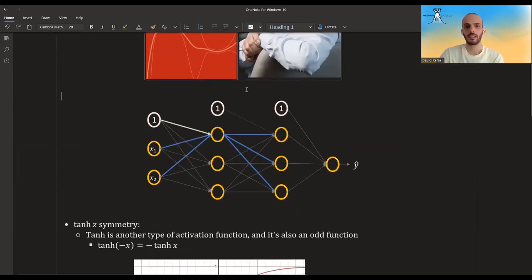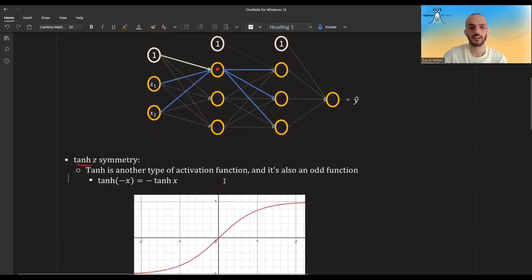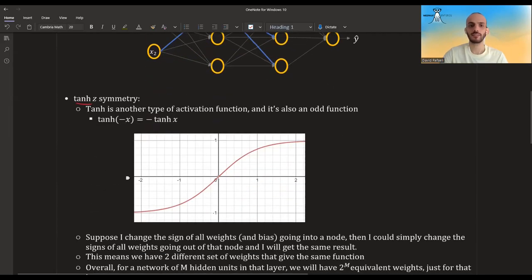So looking back at our neural network example and focusing on a single node, focusing only on this node. Suppose this node has a tanh activation function, and what is a tanh? It's just another type of activation function. Instead of going from zero to one like the sigmoid, it goes from minus one to one, and it's also an odd function.